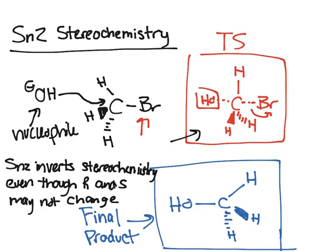Right here, what I've wrote is that SN2 reactions invert the stereochemistry of the molecule, even though the R and S may not change. Here, we could do it out. Actually, we can't assign an R and S because this is not chiral. So let me do two examples.